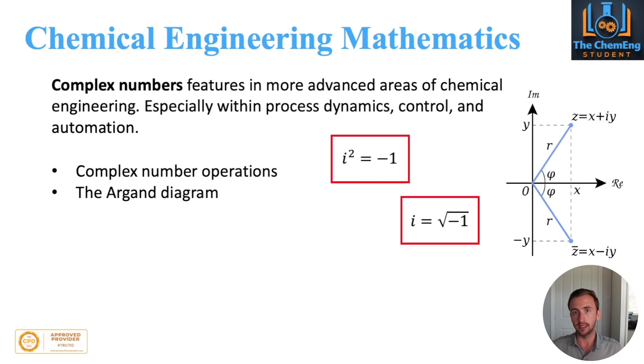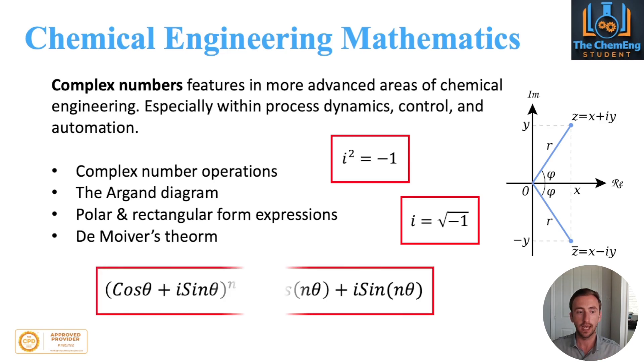You then need to be comfortable with the Argand diagram. So that's this here - the plot of a complex number with its real part on the x-axis, and its imaginary part on the y-axis. And polar and rectangular form expressions. And De Moivre's theorem - a convenient way of solving any complex number system that involves higher order powers to any integer. General operations are only to the power 1, but De Moivre's theorem covers any power. If that's something you would like to see how to solve in detail, let me know in the comments below if you would like a video on De Moivre's theorem.